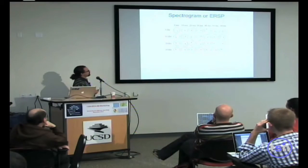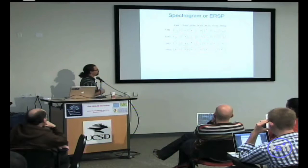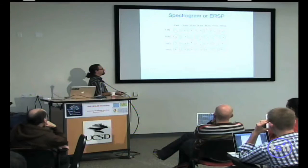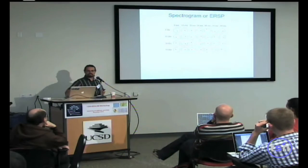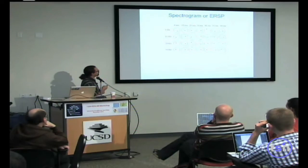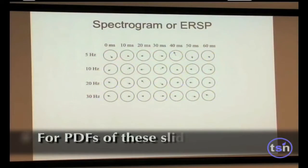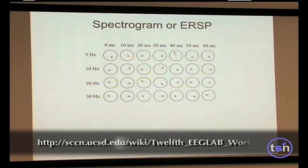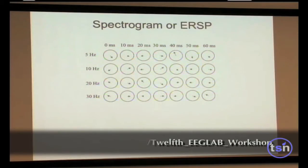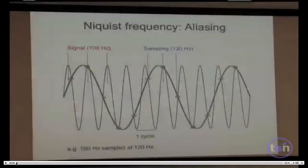Instead of averaging windows across time within a single trial, you can use data from multiple trials. For one trial you have windows at 5 Hz, 10 Hz, 20 Hz, 30 Hz, etc. across different latencies — overlapping or not. You then average the squared vector lengths to obtain the power at each frequency, building the power spectrum.